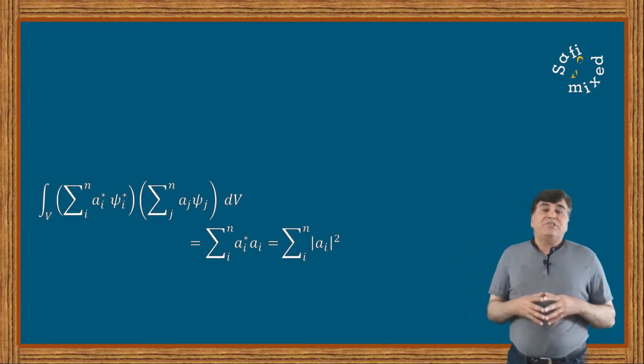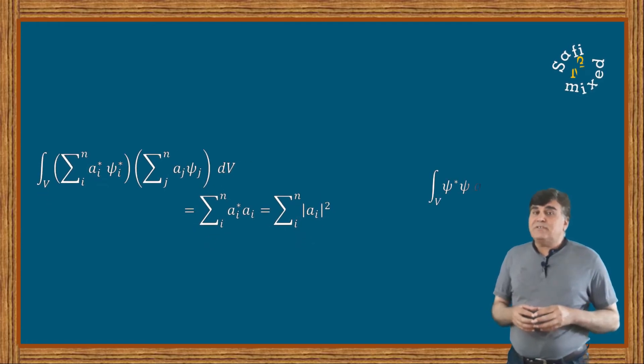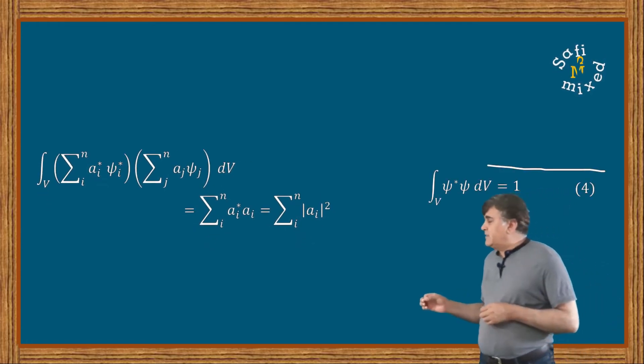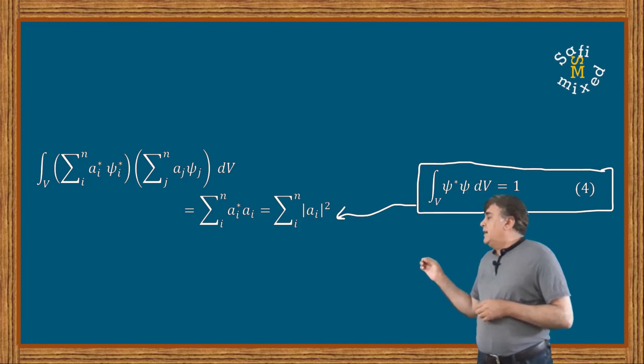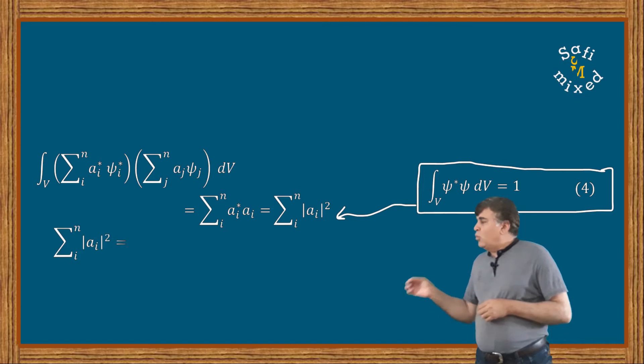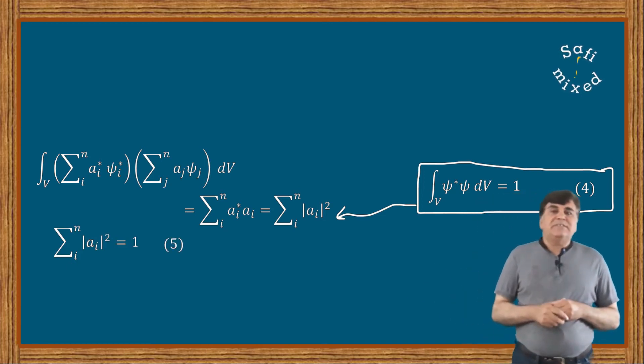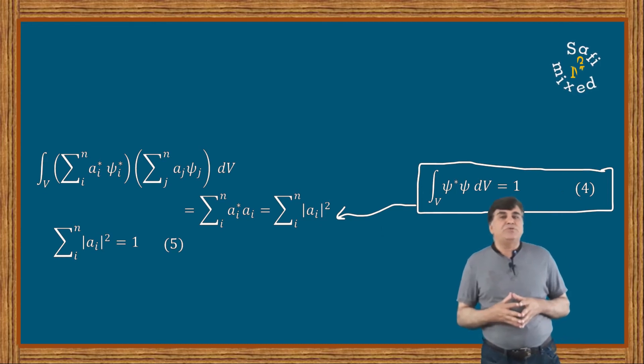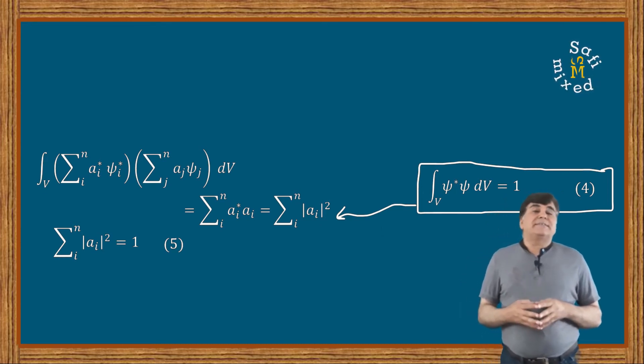Now substituting this value in equation 3 straightaway dictates that the sum over the modulus squared of probability amplitude equals one. This means that the sum of the square of modulus of probability amplitudes obey the normalization condition.